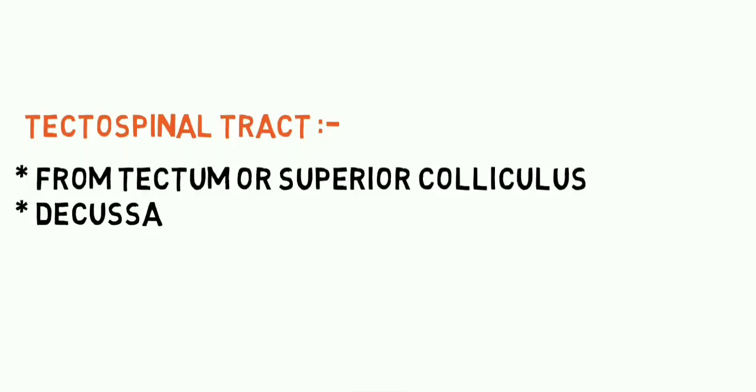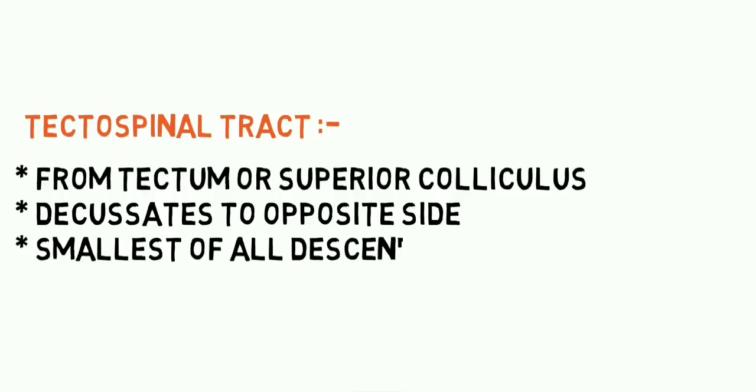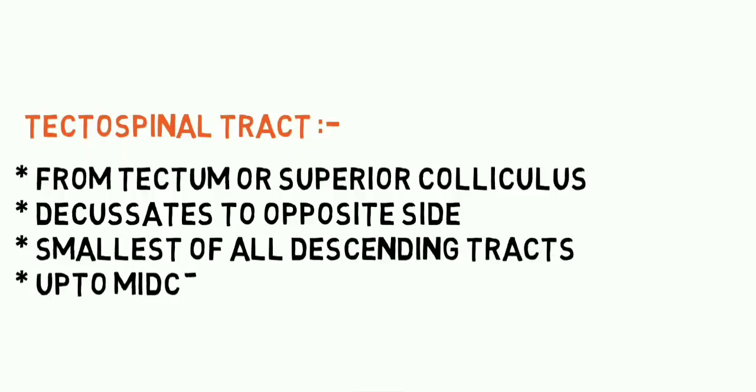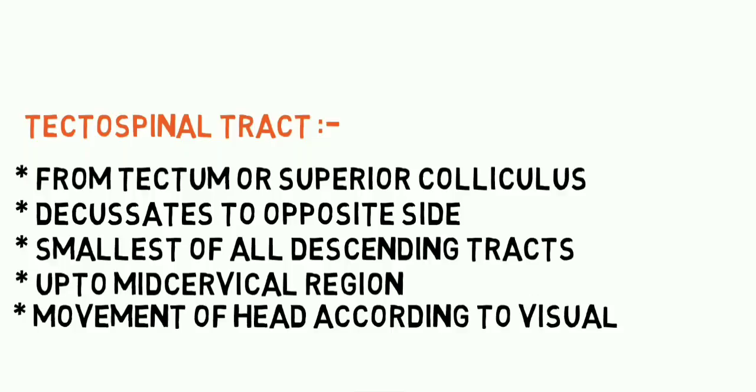The tectospinal tract arises from the tectum, specifically the superior colliculus, which is mostly involved in vision. It decussates to the opposite side and is the smallest of all the descending tracts, extending only to the mid-cervical level. It helps in the movement of the head in response to visual stimuli and the maintenance of head posture.